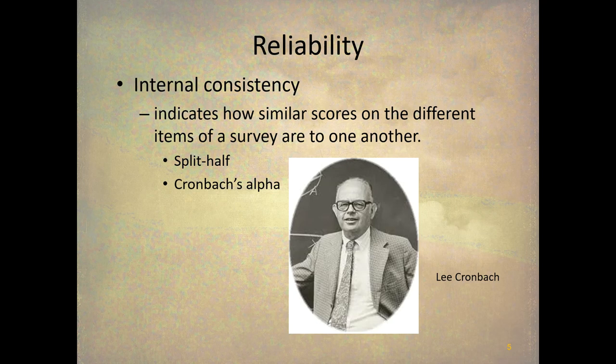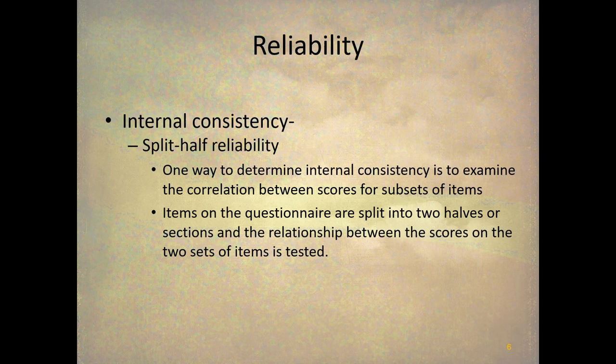One source of the other source of information about reliability comes from internal consistency. And internal consistency is how similar the scores on different items of the survey are to each other. And there's two ways that we can go about getting that data. One is the split-half method, and one is using Cronbach's alpha. Getting internal consistency data from the split-half method is fairly easy. As the name implies, we're going to split the test in half. So we're going to say the first 10 questions are half one, the second 10 are half two, or we can say the odd questions are one half, and the even questions are one half. And then we're going to correlate them to each other. And so we're just looking at the correlation of one set of questions, one half of the test to the other half of the test. And that will give us an internal measure of reliability.